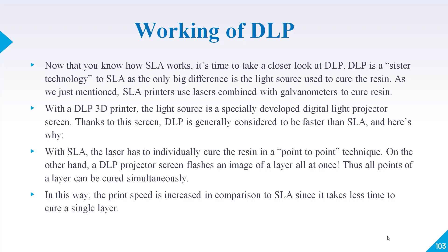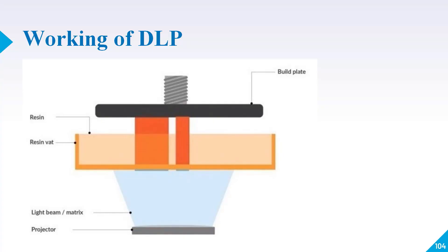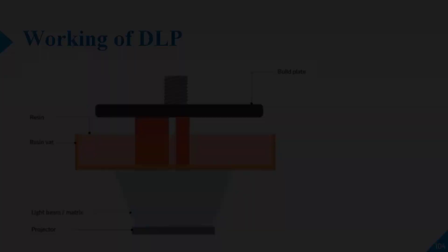Because the projector screen flashes its image, each layer is cured in a single moment — something a laser cannot do. Here you can see the working of DLP: at the bottom there is a projector, and the light beam contacts the liquid resin. When the light beam contacts the resin it solidifies into a solid layer, then the build platform moves down one step and the process repeats until the model is created.